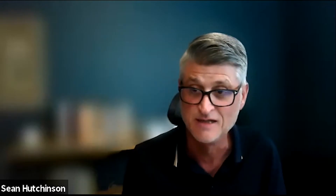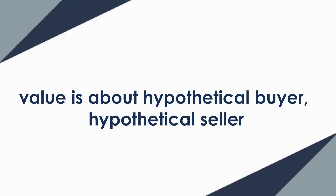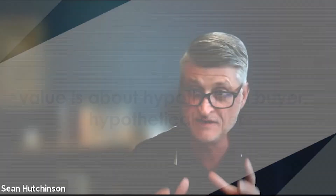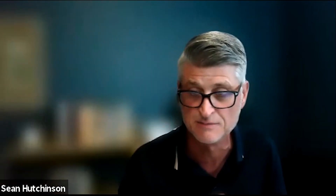Price is about making a deal between two parties that are real parties — you and somebody concrete. Value is about a hypothetical buyer and hypothetical seller. Price is going to be negotiated between two real parties. Value is going to be determined as though there are two parties out there, but it's not necessarily you, and it's not necessarily a specific buyer.